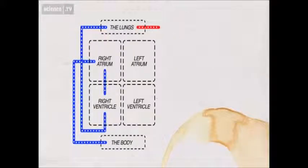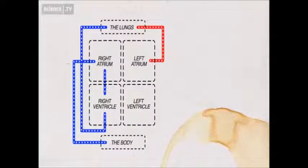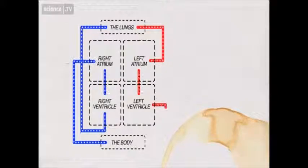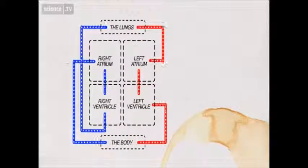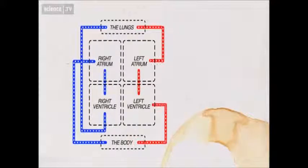Now the blood comes back to the heart, all perky and full of oxygen, into the left atrium this side. That's right, the same as if you're looking down at your own heart. The left atrium pumps it into the left ventricle. And that's the strongest part of the heart that's going to pump all that oxygen rich blood around your whole body.